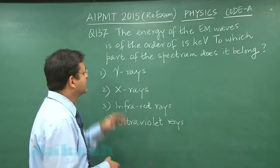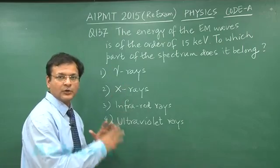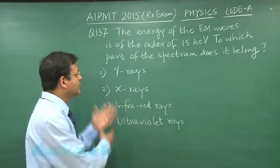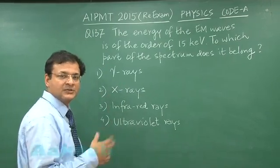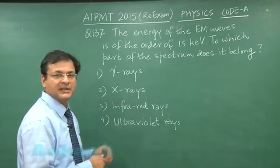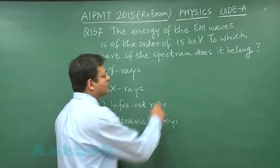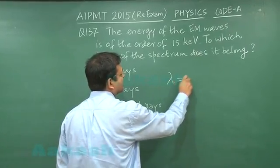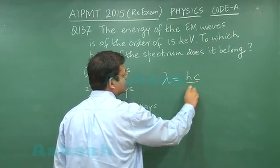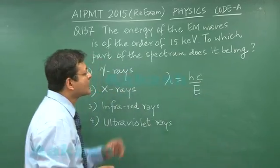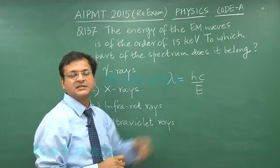So it is a kind of question in which you have to know the order of wavelength or frequency of these rays which have been given. It is always good that you remember them in terms of wavelength - say if you calculate the wavelength here, lambda is hc by E. E is energy here and h is Planck's constant, c is speed of light.